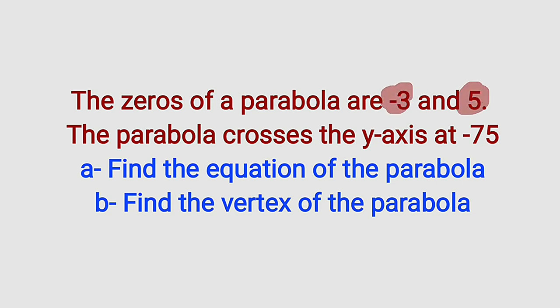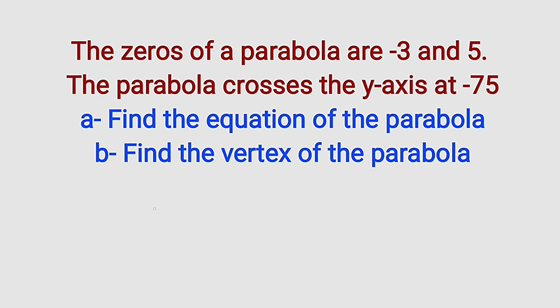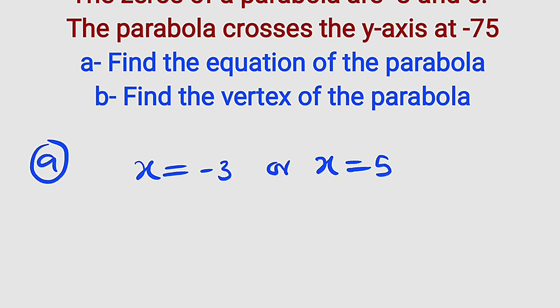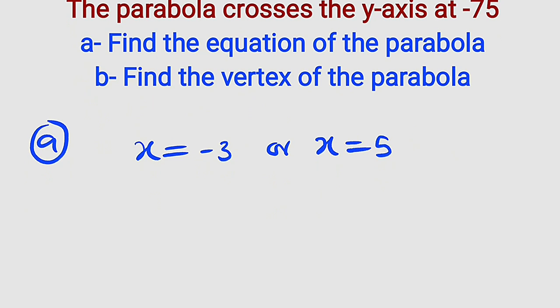If these are the zeros, it means they are the solution to that quadratic equation. Therefore, if you solve that equation, you are going to obtain x equal to negative 3 or x equal to 5. Remember that we have a general formula used to find a quadratic equation when the zeros are given. The formula is x squared minus sum of the roots, meaning you should add the two roots together, then you multiply by x. Then you add the product of roots. And you set this to be equal to zero.